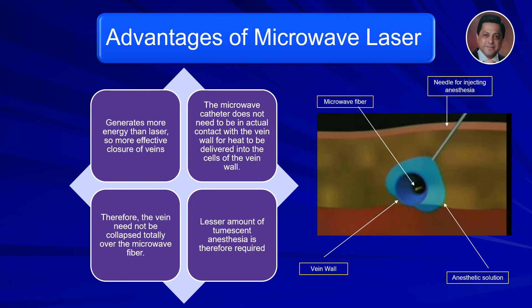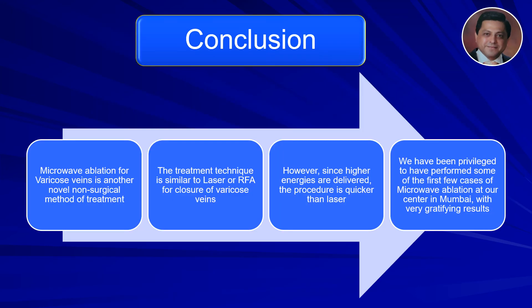Therefore the vein need not be collapsed totally over the microwave fiber. So the operator or physician has to deliver less amount of tumescent anesthesia in the patient, which is very good as far as patient comfort is concerned.